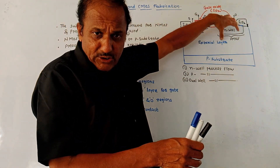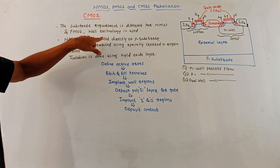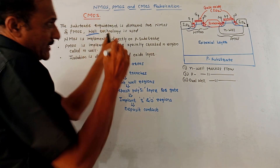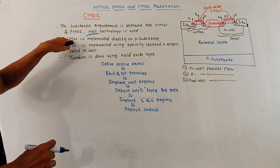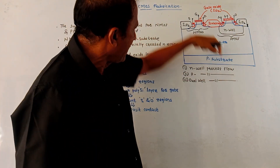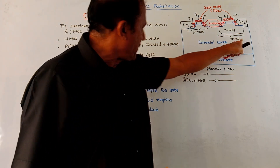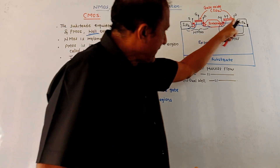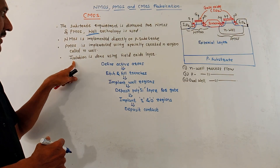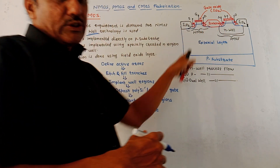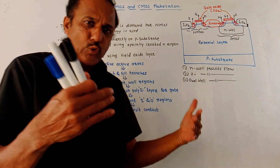To obtain both devices on a single chip, a well technology is used. The Nwell process is used for implementation of the PMOS device. NMOS is implemented directly on the P-substrate, while PMOS is implemented using a specially created N-region called Nwell. Isolation between the two is again provided using silicon dioxide. Depending on the well structure used, the process flow can be Nwell, Pwell, or dual-well, in which both N and Pwell techniques are used.